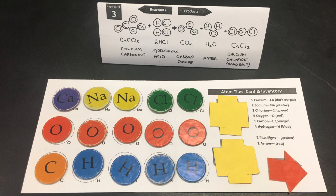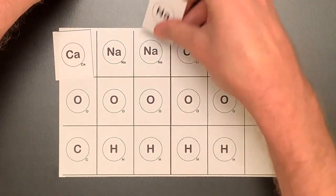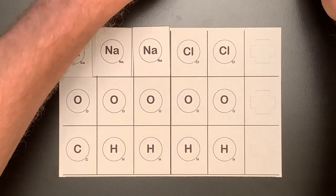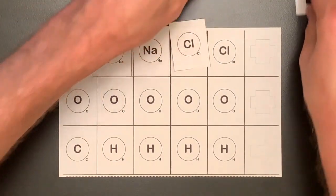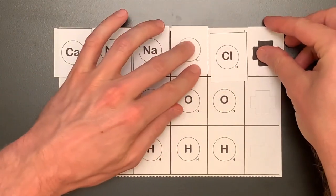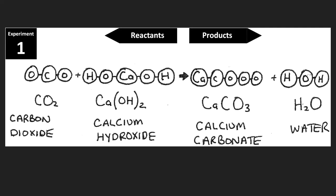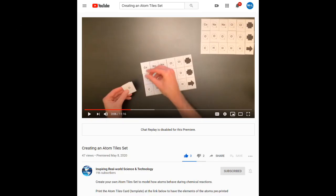Now we will use our atom tiles and support station. You may have a set of round colored tiles, square pre-printed tiles, or square handwritten tiles. Any of these sets will work beautifully, giving you a concrete, hands-on visual way to build a model of our chemical reactions. Begin by laying out your atom tile card on your table and setting each atom tile in the matching spot on your card. Then turn your support station to display experiment number one, or open the virtual support station at the link below. If you do not yet have your own atom tile set, please pause and go to the video and PDF links below to learn how to make your own card for this reactions lab.